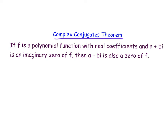With the irrational conjugates theorem, we had to add in the opposite irrational root. The complex conjugates theorem states that if f is a polynomial function with real coefficients and you have an imaginary zero such as a plus b times i, it will have a paired imaginary zero of a minus b times i. So if we find we have an imaginary zero, we need to make sure we also account for its conjugate.